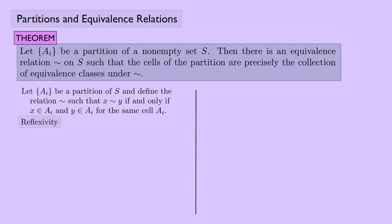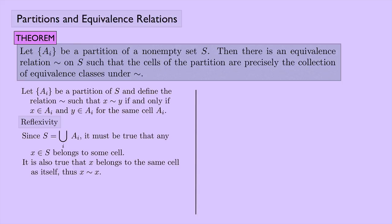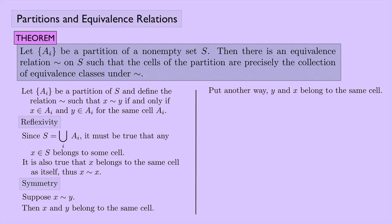Let's look at the three properties. First, reflexivity — this one's easy. We know that S is the union of all the different cells, so any element in S belongs to some cell. In particular, X belongs to the same cell as itself, so X is equivalent to X. For symmetry, suppose X is equivalent to Y; we want to show Y is equivalent to X. By our definition, X is equivalent to Y means X and Y are in the same cell. But that's just another way of saying Y and X belong to the same cell, so Y is equivalent to X.